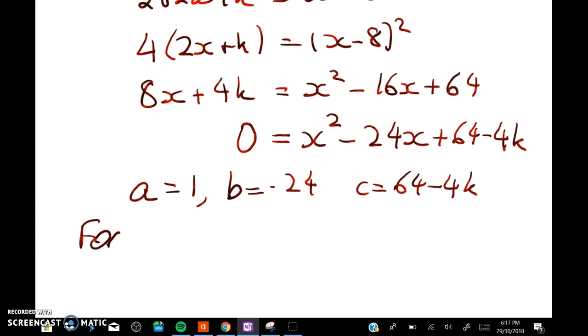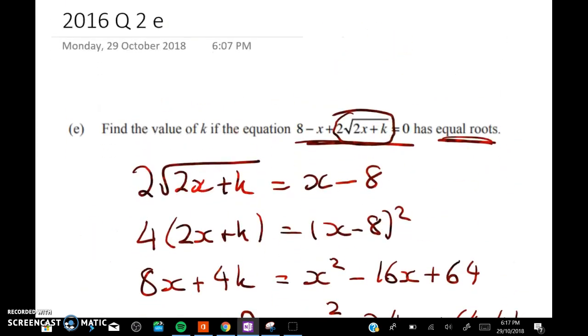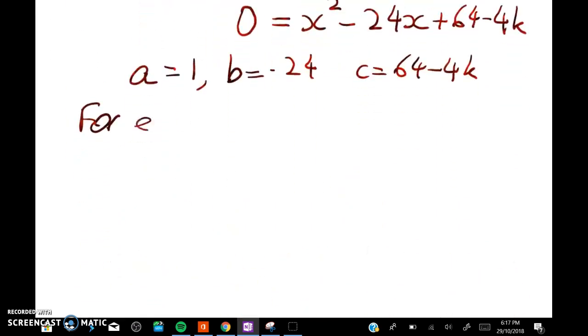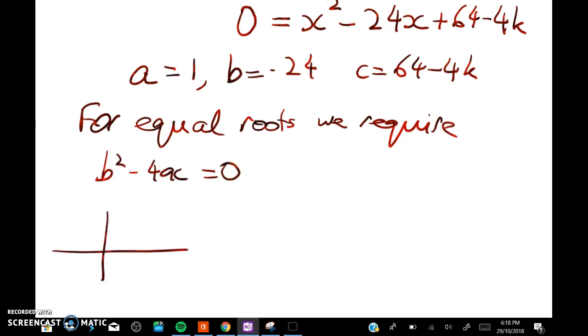So what were we asked for? Equal roots. Right, so for equal roots, this goes back to level 2, we require the discriminant b squared minus 4ac equals 0. So remember we're talking about the situation where we've got a parabola and it just touches the x-axis.